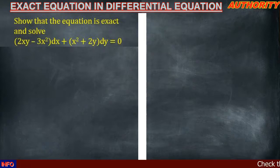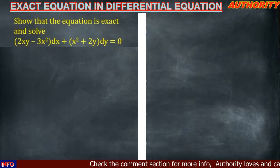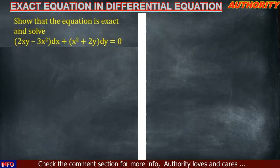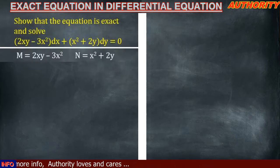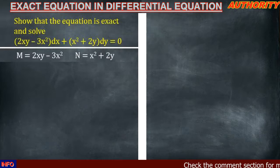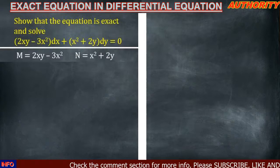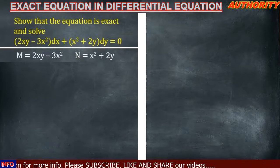We are asked to show that this equation is exact and then go further and solve it. The part that has dx attached to it we are going to call M, and the part that has dy attached to it we are going to call N. So M is equal to 2xy minus 3x², and N is equal to x² plus 2y.